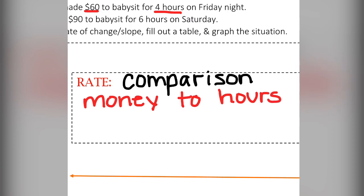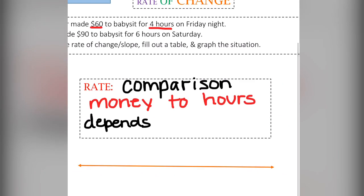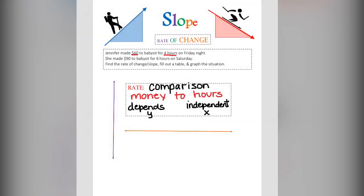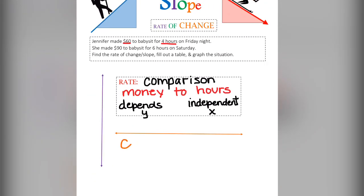Let's think about the amount of money we make will be dependent on how many hours we work. Therefore, the hours that we work are independent. We need to know this because we need to know that independent variables are always x, and dependent variables are always y.